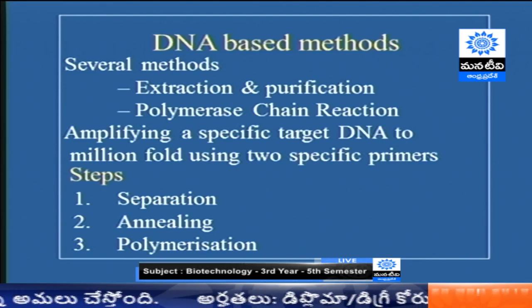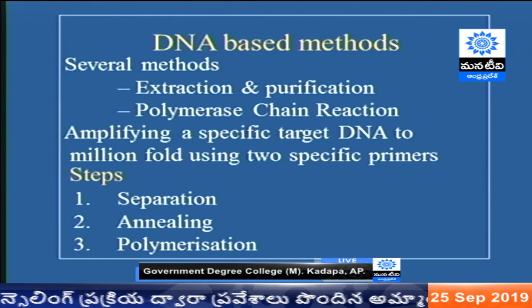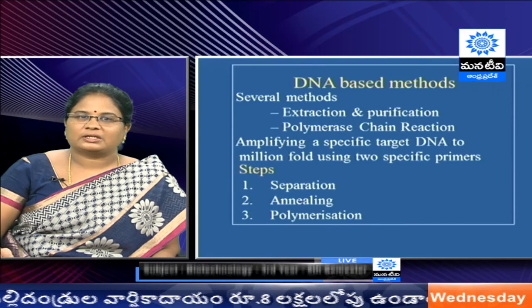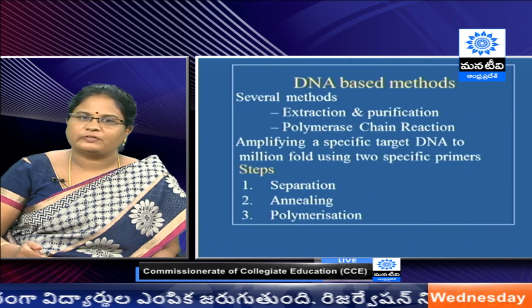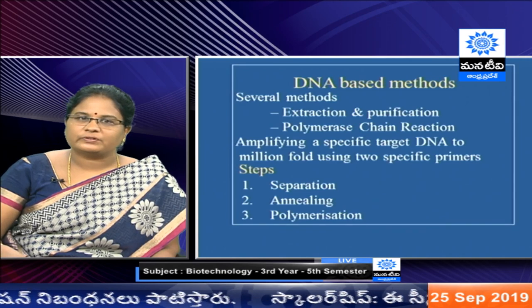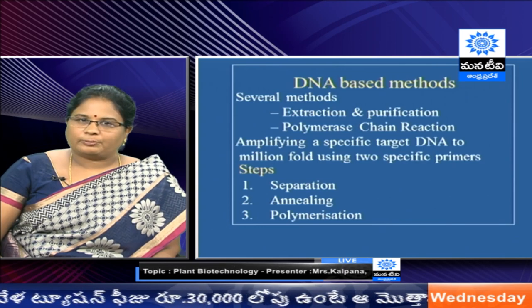First we briefly discuss the steps involved in PCR. The first step is denaturation — the template DNA is separated into two single strands at around 94 or 95 degrees centigrade. The second step is annealing — specific primers of around 20 to 25 nucleotides bind wherever they find complementarity. The annealing temperature varies from about 50 to 60 degrees based on the primer sequence and GC content. The third step is polymerization or synthesis, using a thermostable DNA polymerase. We generally use Taq polymerase.